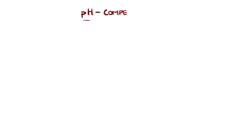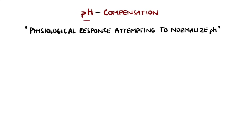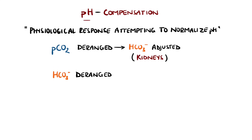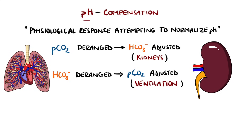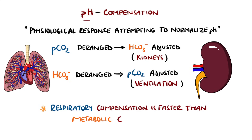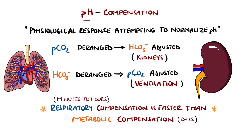Remember that there are mechanisms in the body that work to keep the pH within the normal range. This is known as compensation. For example, if carbon dioxide is causing a change in the pH, the kidneys can adjust the amount of bicarbonate in the blood to counteract this, and it also works vice versa. If changes in bicarbonate are causing the change in the pH, the body can adjust ventilation to increase or decrease the carbon dioxide to compensate. Generally, compensation through ventilation will happen faster than changes in bicarbonate, which may take several days.